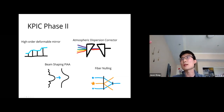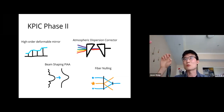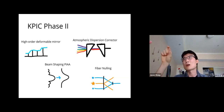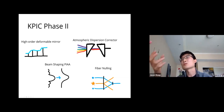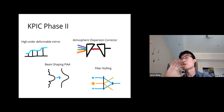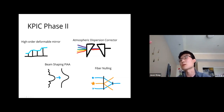For speckle nulling, since we know exactly where the planet is, we can use the deformable mirror to redirect all stellar light away from the planet's position to other parts of the focal plane. We're also testing a new mode called vortex fiber nulling, which distorts the stellar PSF so it doesn't couple into the single-mode fiber at all, while planets at ~0.5–1 λ/D separation do couple in. This pushes to much closer angular separations by combining high-resolution spectroscopy and fiber nulling interferometry.